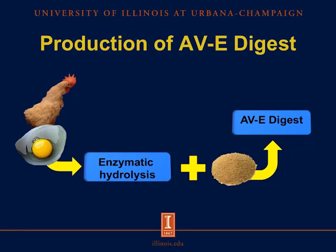Now, let's see how is the production of ABE Digest. The process begins by blending spent hens with egg components and some enzymes. This process goes for a certain amount of time and temperature. The hydrolysis of these components are mixed again with a dry carrier, in this case soybean meal, and then this is extruded and ground for a specific particle size.